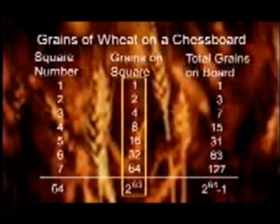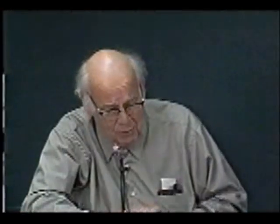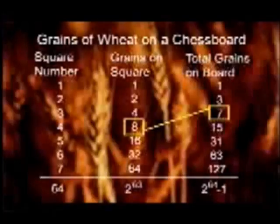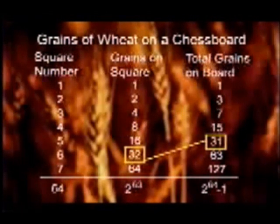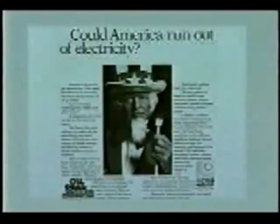How did you get such a big number? It was simple — we just started with one grain but let the number grow steadily until it had doubled a mere 63 times. There's something else that's very important: the growth in any doubling time is greater than the total of all the preceding growth. When we put eight grains on the fourth square, eight is larger than the total of seven already there. When we put 32 grains on the sixth square, 32 is larger than the total of 31 already there. Every time the growing quantity doubles, it takes more than all that was used in all of the preceding growth.